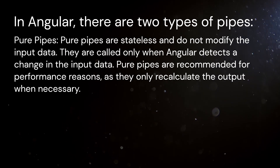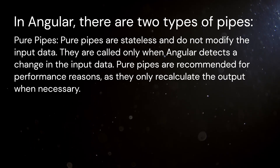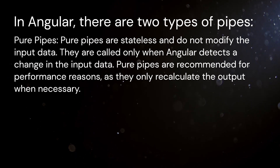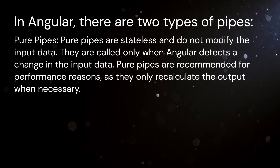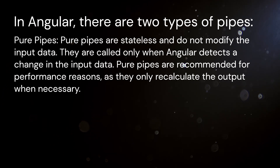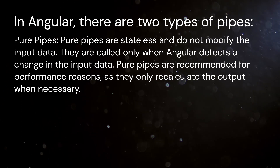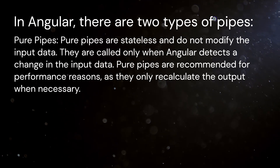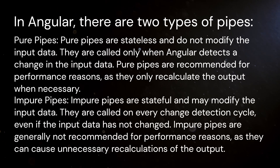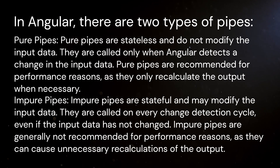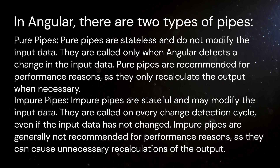In Angular, there are two types of pipes. Pure pipes are stateless and do not modify the input data. They are called only when Angular detects a change in the input data. Pure pipes are recommended for performance reasons as they only recalculate the output when necessary. Impure pipes are stateful and may modify the input data. They are called on every change detection cycle even if the input data has not changed.